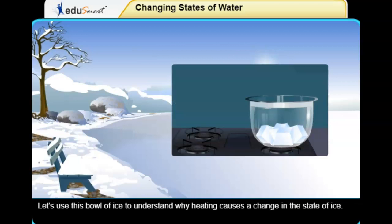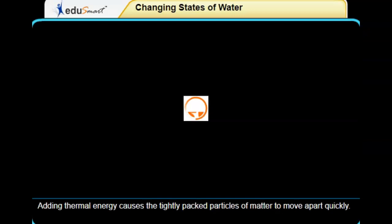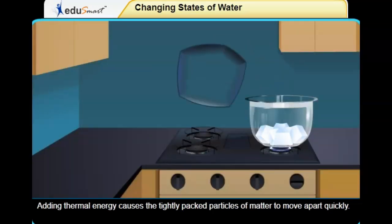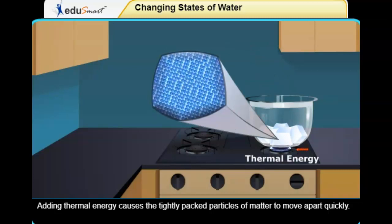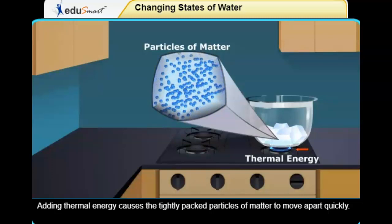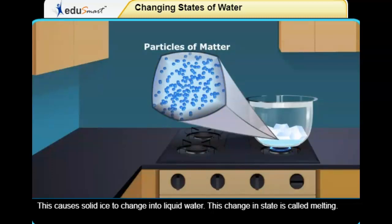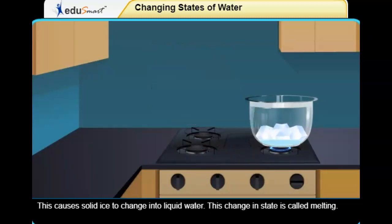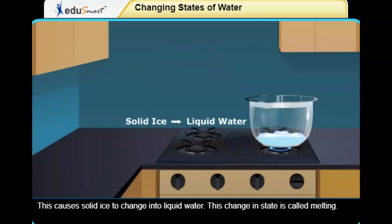Let's use this bowl of ice to understand why heating causes a change in the state of ice. Adding thermal energy causes the tightly packed particles of matter to move apart quickly. This causes solid ice to change into liquid water. This change in state is called melting.